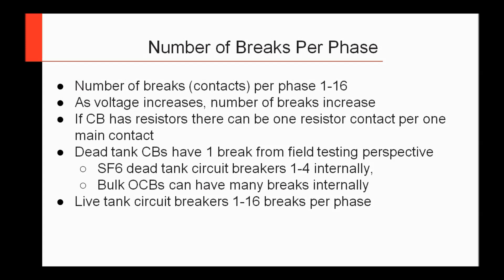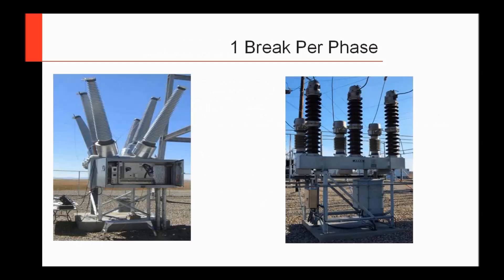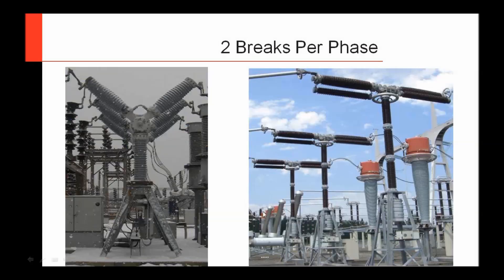Live tank circuit breakers, on the other hand, let you see how many breaks they have right there in the field, and you can test each break individually and hook up to them. Here's an example: on the left we have a dead tank circuit breaker with three phases and three interrupters — that's one break per phase. On the right we have a live tank circuit breaker where voltage comes in here, goes down, and comes out here — also one break per phase. Then as we get into two breaks per phase, you'll see that in the field these are all live tank circuit breakers. So here you have one interrupter on one side and another interrupter on the other side, times three phases.